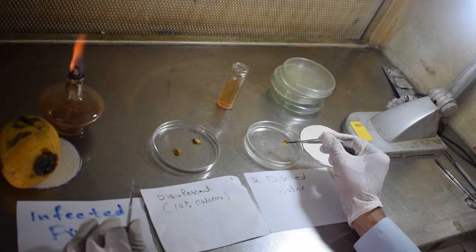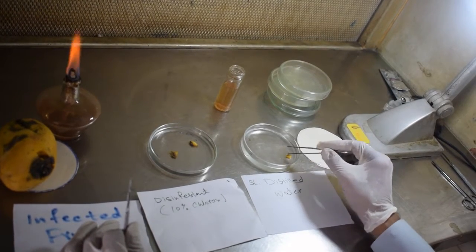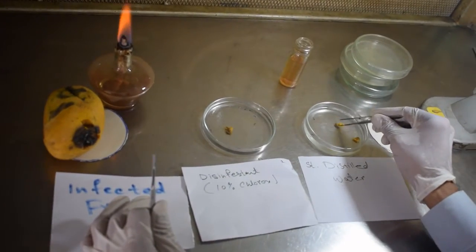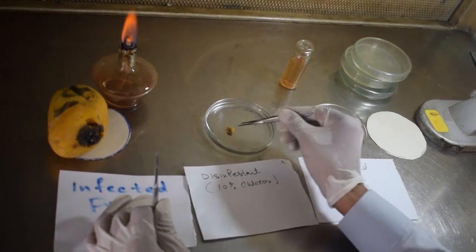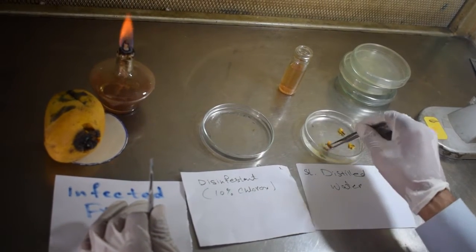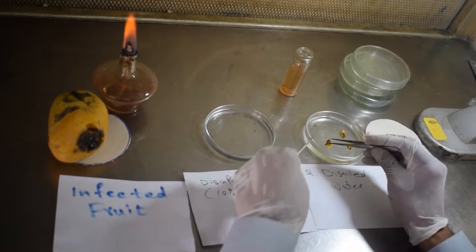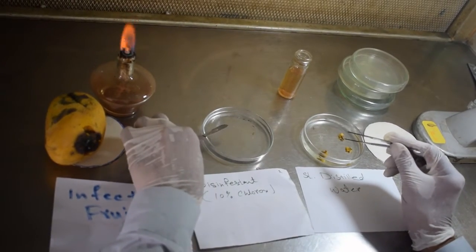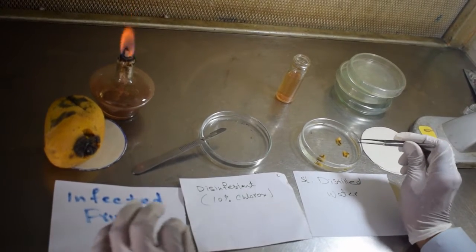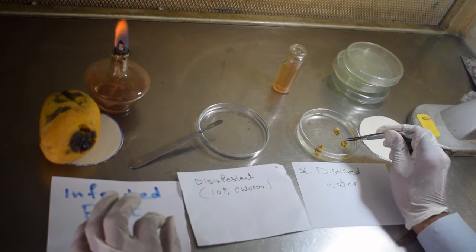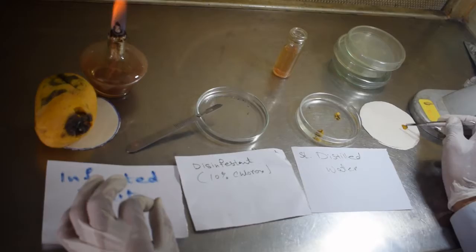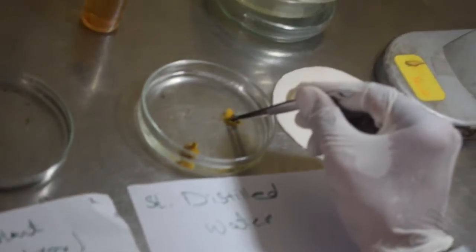Now we are placing it in the sterile distilled water for a while. These are put here just to remove the disinfectant from the surface of the infected parts, because we place them on the blotter paper before placing them in the media plates.